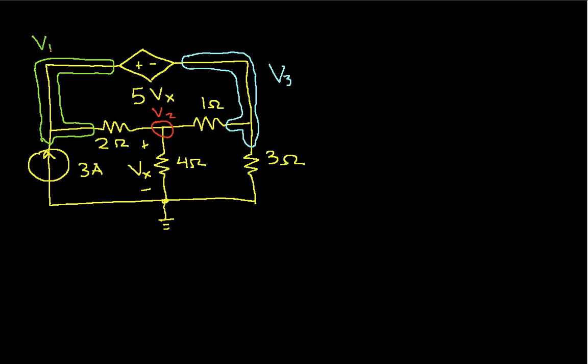Well, we'd like to start with node 1. But you'll notice that node 1 is connected with the voltage source, this 5Vx. It's a dependent voltage source, but it's still a voltage source, to node 3.